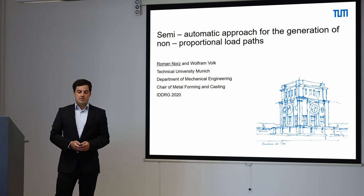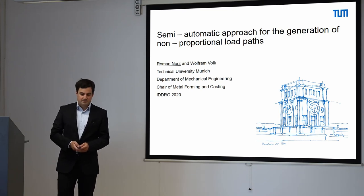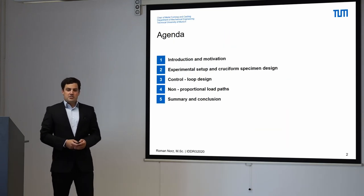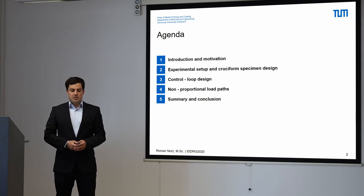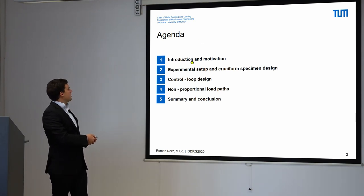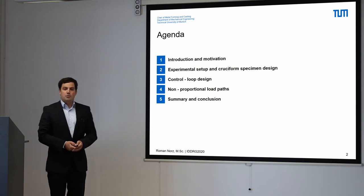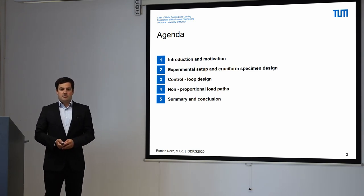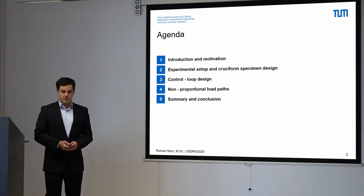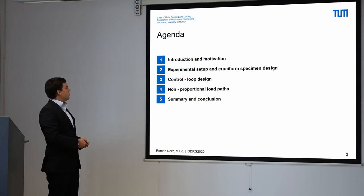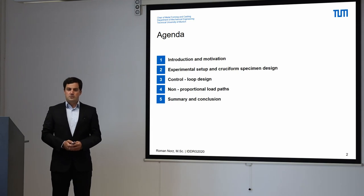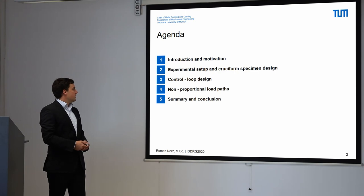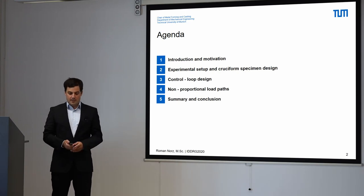I'm going to give a talk about the semi-automatic approach for the generation of non-proportional load paths. My presentation is divided into five different parts: first, a short introduction and motivation; followed by the experimental setup and the cruciform specimen design; the third and fourth parts are the results and the control loop we have used; and finally, a short summary and conclusion.